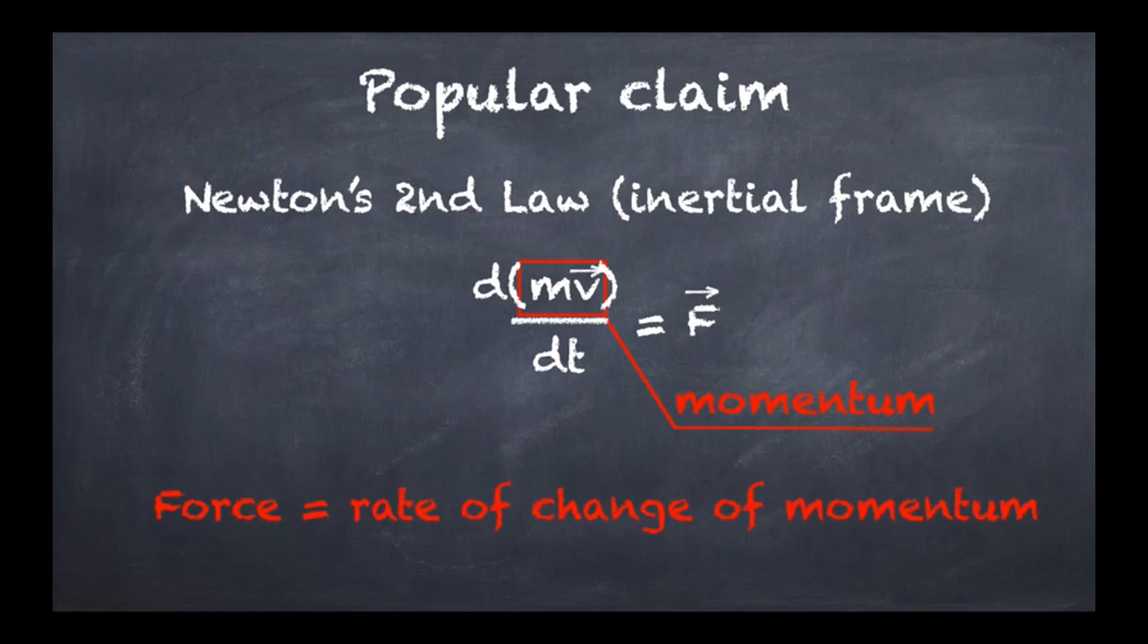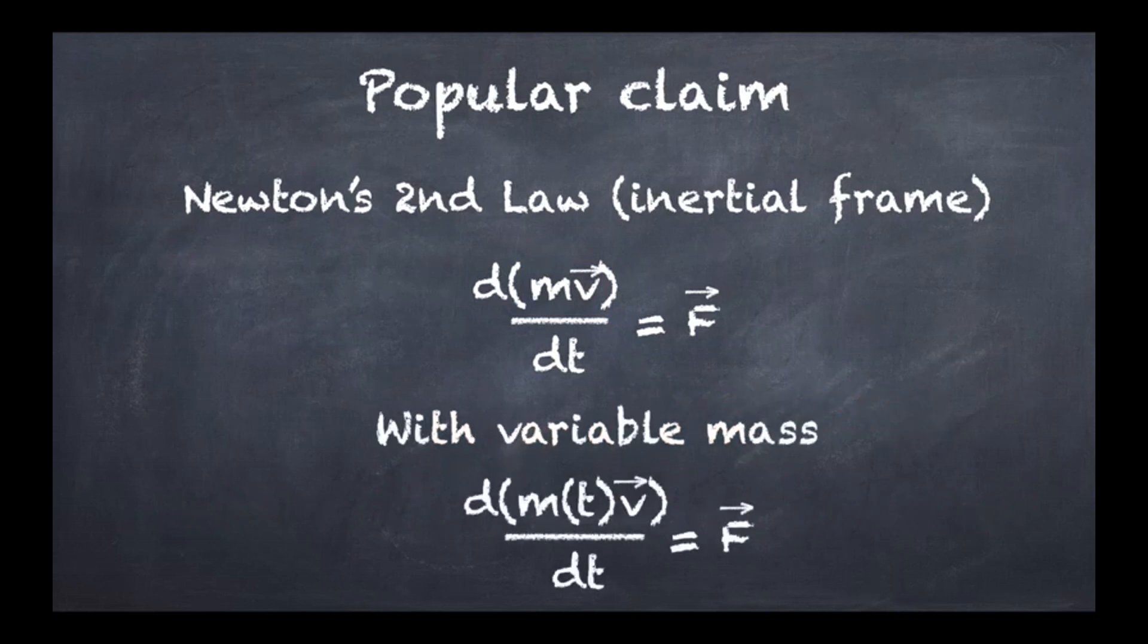Force is equal to the rate of change of momentum. Now if we trust this particular slogan, even if the mass depends on time, then this leaves us with the following result: d of m of t times v over dt is equal to F. Now because of the product rule, when we take derivatives of a product of functions, we get the following quantity.